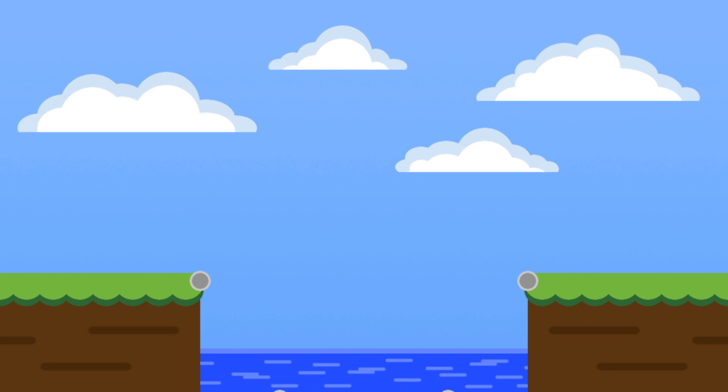Well that bridge doesn't look very safe, does it? It collapsed under its own weight because the stresses in some of the beams were too high, so they broke.